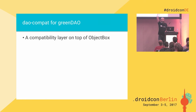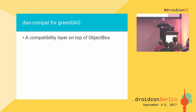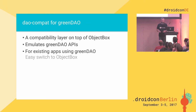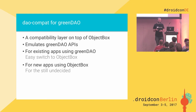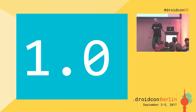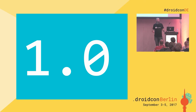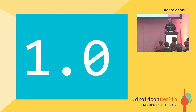Does anybody use greenDAO? There is a compatibility layer — a greenDAO API on top of ObjectBox that emulates the greenDAO API. It helps if you have an app with greenDAO to switch to ObjectBox. ObjectBox was released yesterday with version 1.0! We are still at the very beginning and would love your feedback — try it out, give it a shot, and write us emails about how you like it or what you don't like. We really want to make this good.